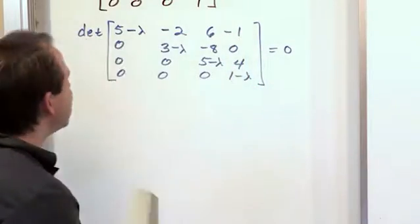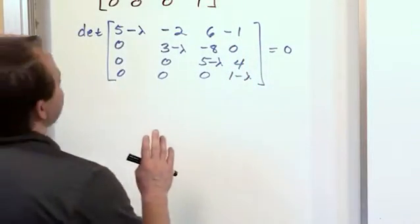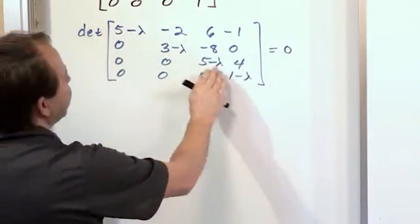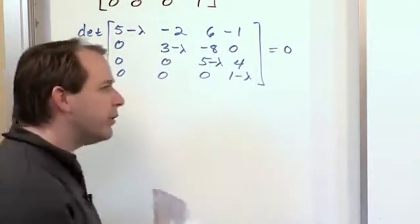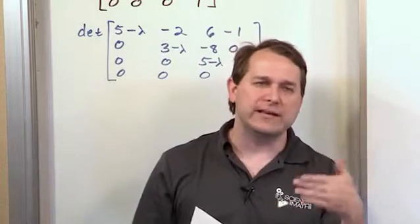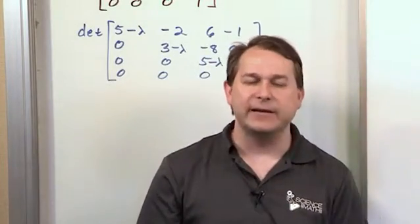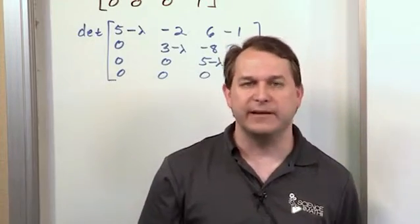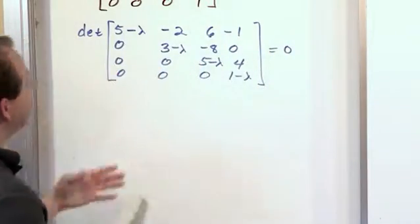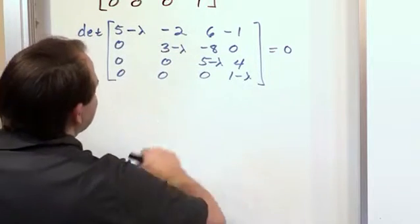In this case, we notice that the matrix we were given is already in triangular form. And remember, you can find determinants if you can get the matrix in triangular form - if it's already like that in this case, or if you do your own row operations to get there - then basically the determinant is the product of the diagonal elements.